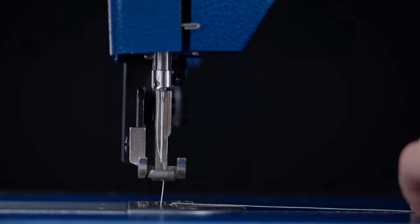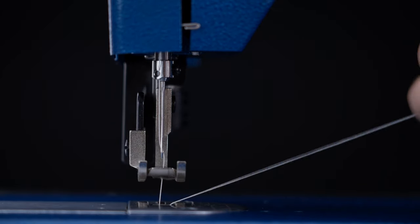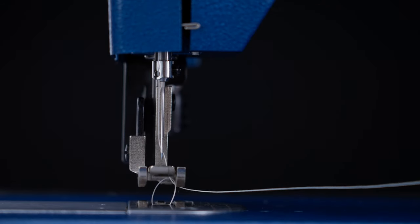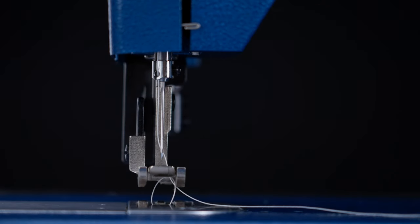As the needle nears its highest point, pull the needle thread gently. The bobbin thread should come up through the needle hole with the needle thread in the form of a loop.